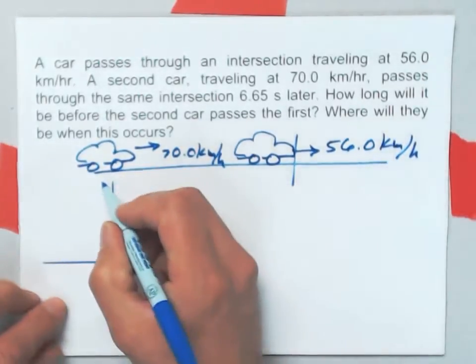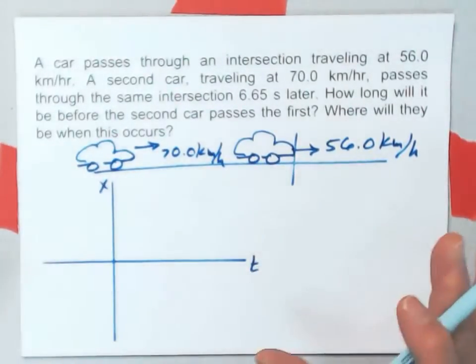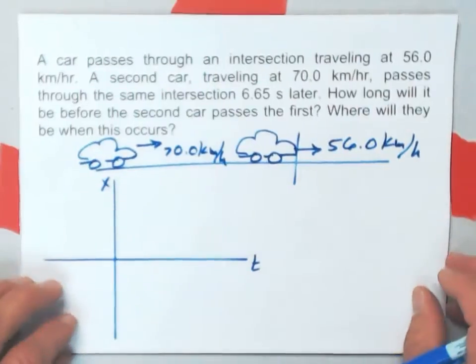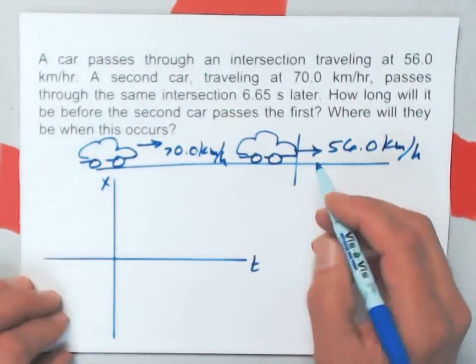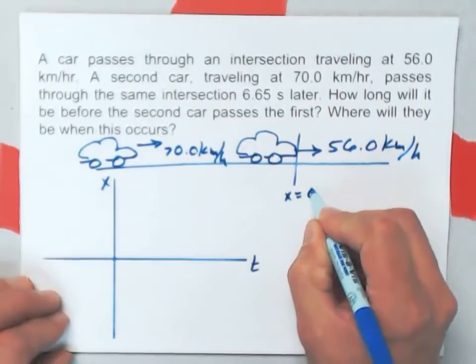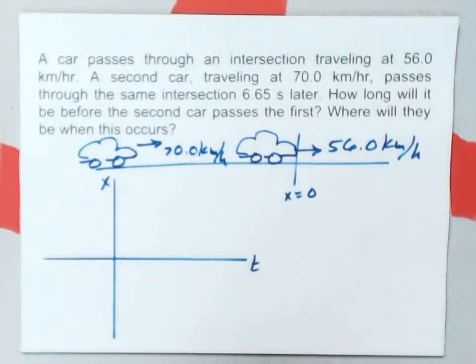This will be an x versus t graph. I'm not going to put units on it, I'm not going to get quantitative with my graph at all. But I'm going to let the x equals zero position be the intersection that the first car is passing through.